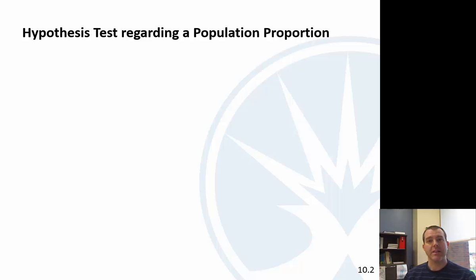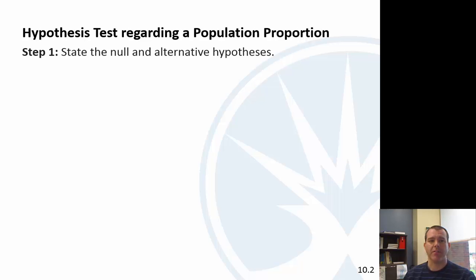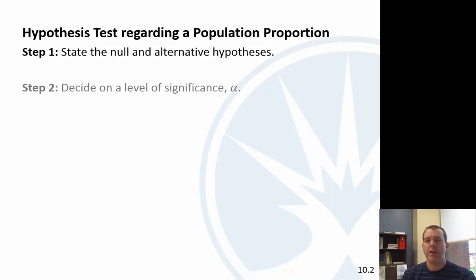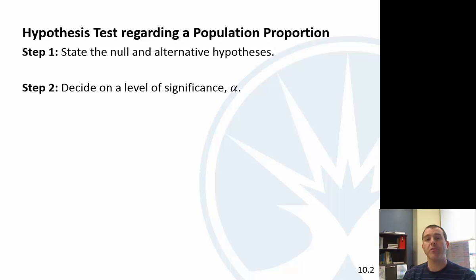Let's look at hypothesis tests regarding a population proportion. Here's the basic process we'll use for the next few chapters. The first thing we do is state very clearly what our null and alternative hypotheses are. Step 2 is to decide on your level of significance — that's your probability of a Type 1 error, basically your threshold for how comfortable you are with incorrectly supporting the alternative hypothesis.